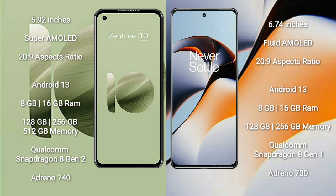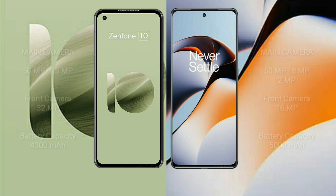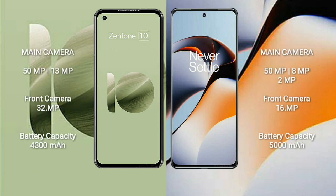OnePlus 11R comes with 8GB or 16GB RAM and 128GB or 256GB internal storage, powered by a Qualcomm Snapdragon 8 Gen 1 processor with an Adreno 730 GPU.